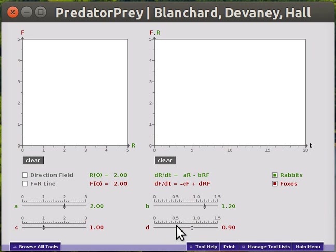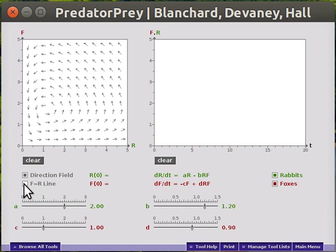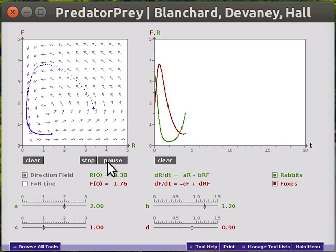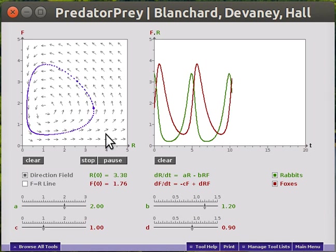Let's go ahead and draw a direction field. Depending on where you start, you get different solutions. Here you're seeing the solution going around in the xy plane. The book is calling it RF instead of xy.